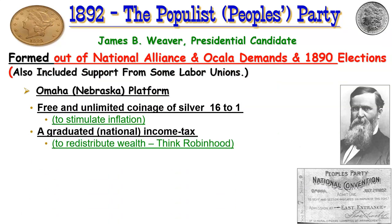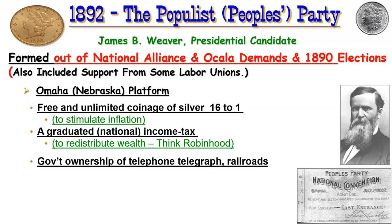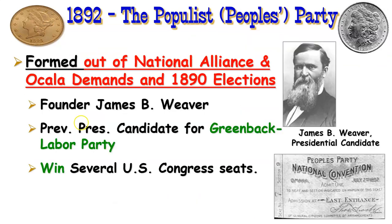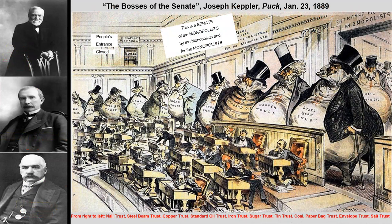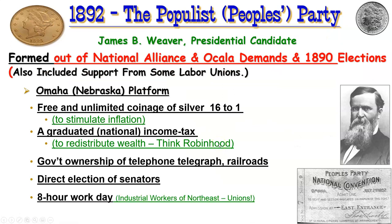The populists want free unlimited coinage of silver to stimulate inflation and counteract economic stress — facing panics in 1873 and 1893 back to back. They want a graduated national income tax, since at the time whatever big businesses made they kept. They want government ownership of railroads and telegraphs, and direct elections of senators — since senators were chosen by state legislatures that were seen as corrupted and controlled by the big trusts, meaning the trusts actually controlled who became a United States Senator.